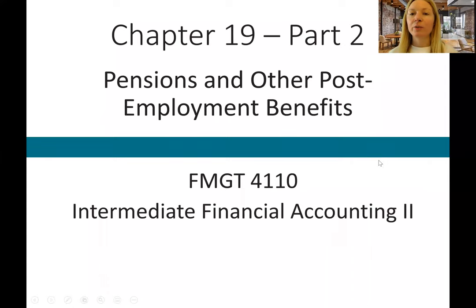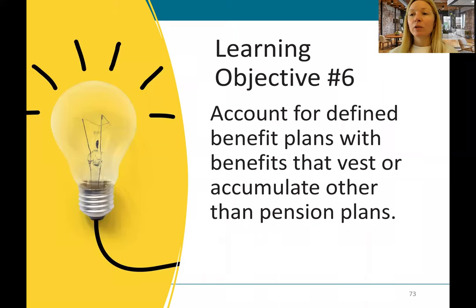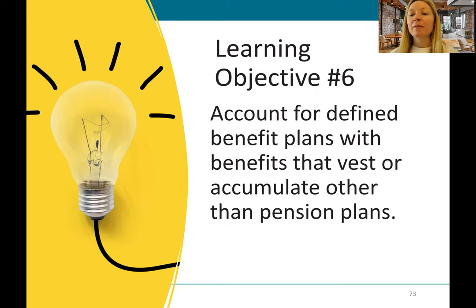Welcome back to the Chapter 19 lecture. This is Part 2, which is a lot shorter and simpler than Part 1. Our sixth learning objective for Chapter 19 is to account for defined benefit plans with benefits that vest or accumulate, other than pension plans.